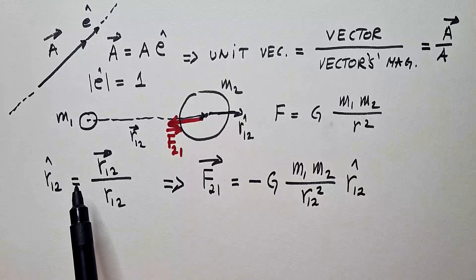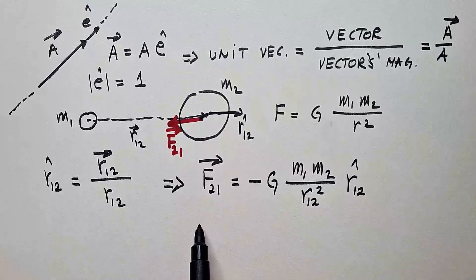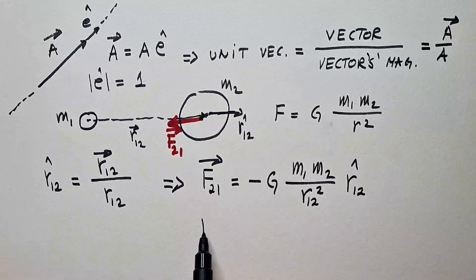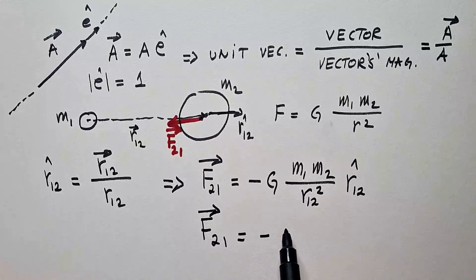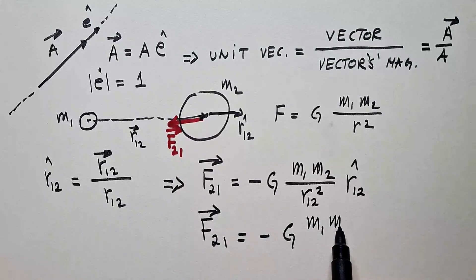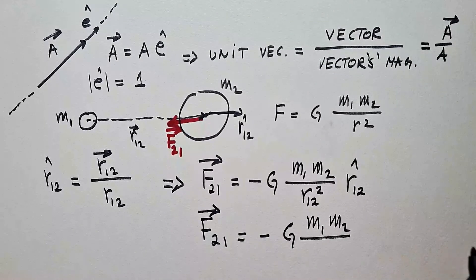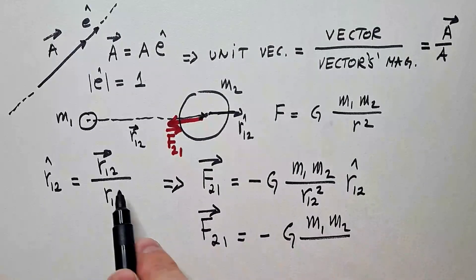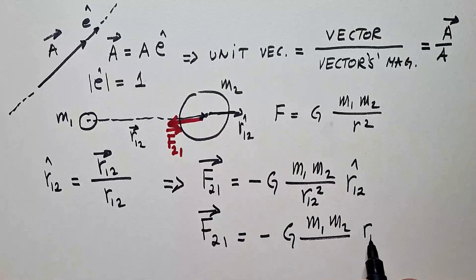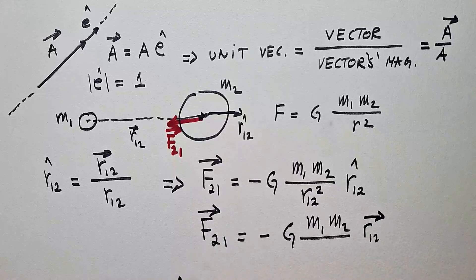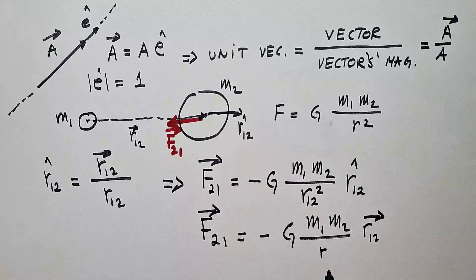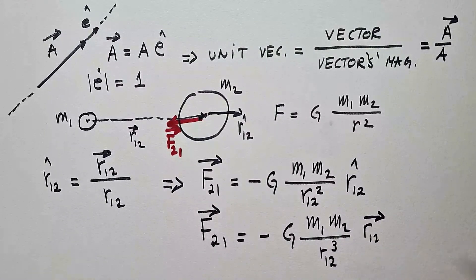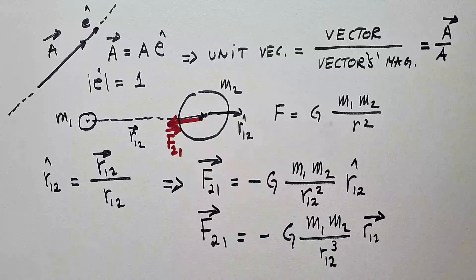Now, when you properly understand how to make these unit vectors, we can write this same great law in the following form. F₂₁ is equal to minus G M₁ M₂ over, look at this now, this is important, instead of R₁₂ kappa, I will write this, so that is R₁₂ vector, here I have R₁₂ squared, and this one will give to the power of 3. And this is another way to write Newton's law of gravity.